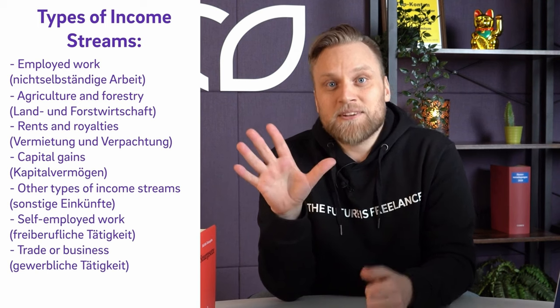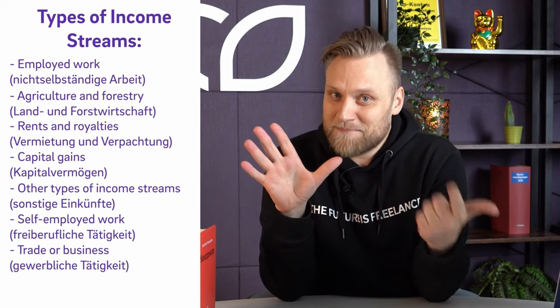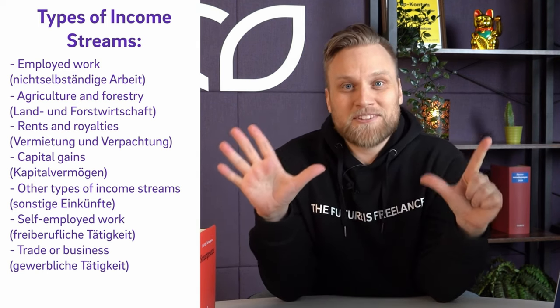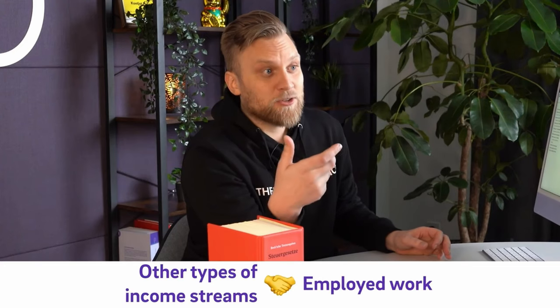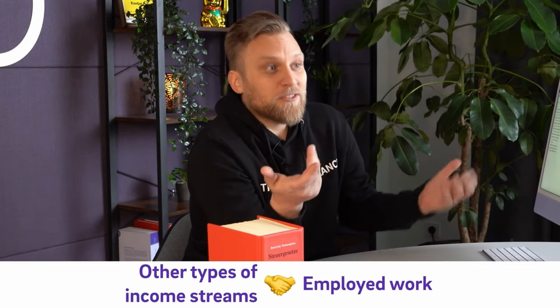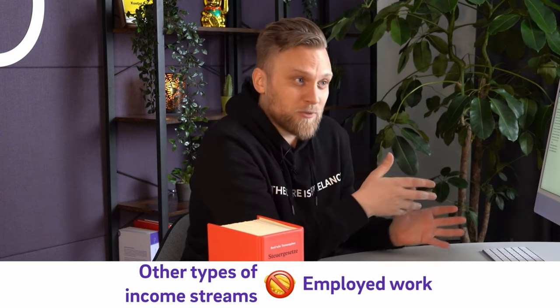With these five types of income, plus freelance activity and business activity, we have our seven types of income together. You add up these types of income, and then you have a total of the earnings. An important point: if you profit from one source and have losses from another, you can't always offset them — you can't offset every type of income with every other type. For example, you cannot offset losses from Bitcoin trading using your employment income.